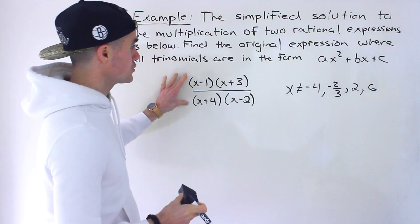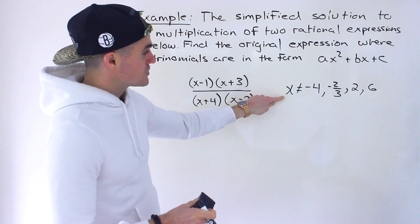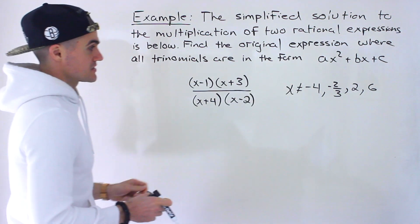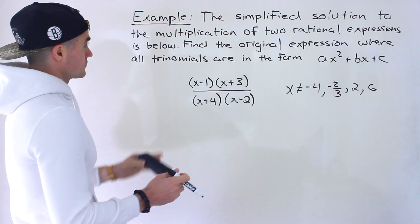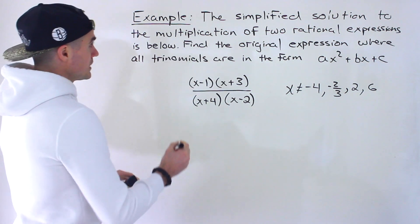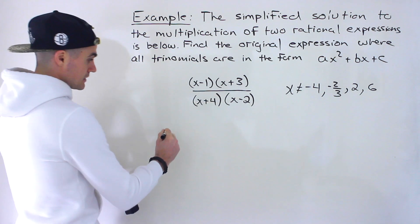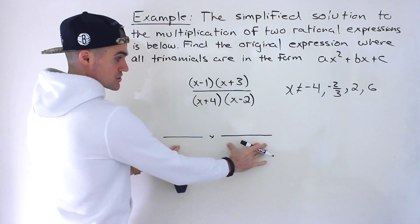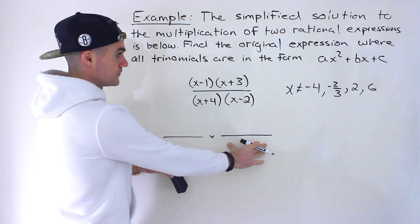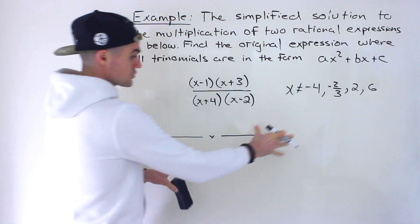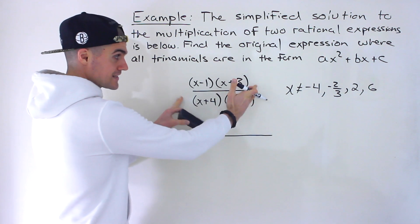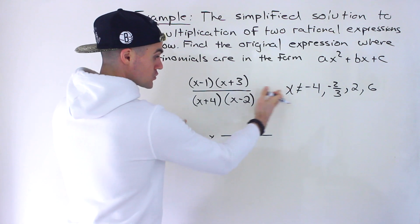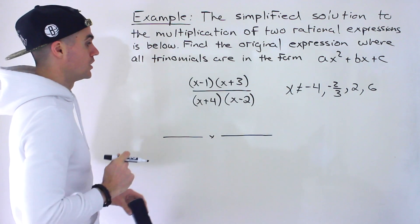The solution is given along with these restrictions: x can't be negative 4, negative 2 over 3, positive 2, and positive 6. The original question is two rational expressions multiplying by each other, and we end up with these restrictions. Usually we're given a question and we find the restrictions — in this case we're given the solution and the restrictions and have to go backwards to find the original question.